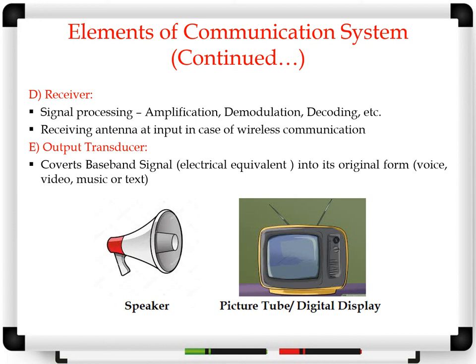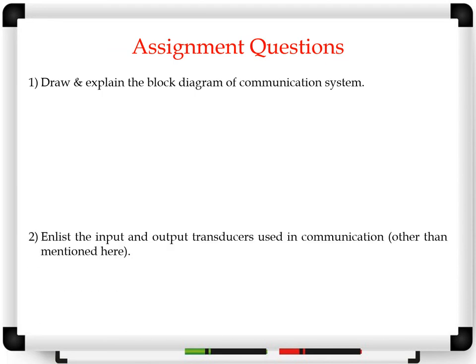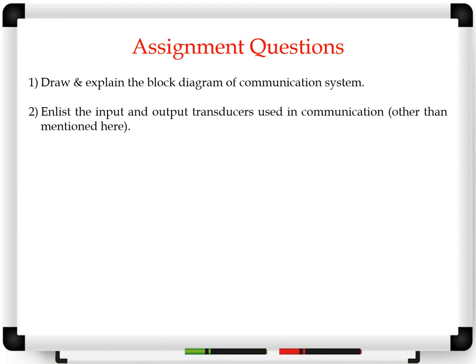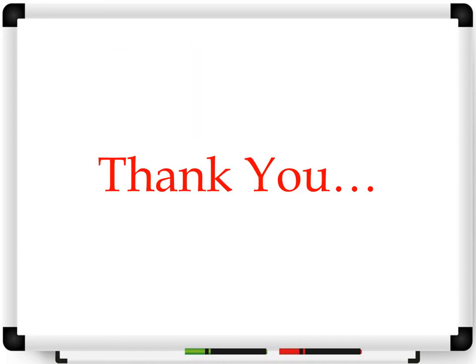This is the block diagram of the communication system. I hope you have understood the topics related to the communication system. Now let us see some assignment questions. First, draw and explain the block diagram of the communication system. Second, enlist the input and output transducers used in communication other than those mentioned here. Third, what will be your choice for a communication channel — wired or wireless? Justify. Thank you, friends. See you with a new topic. Thank you very much. Bye.